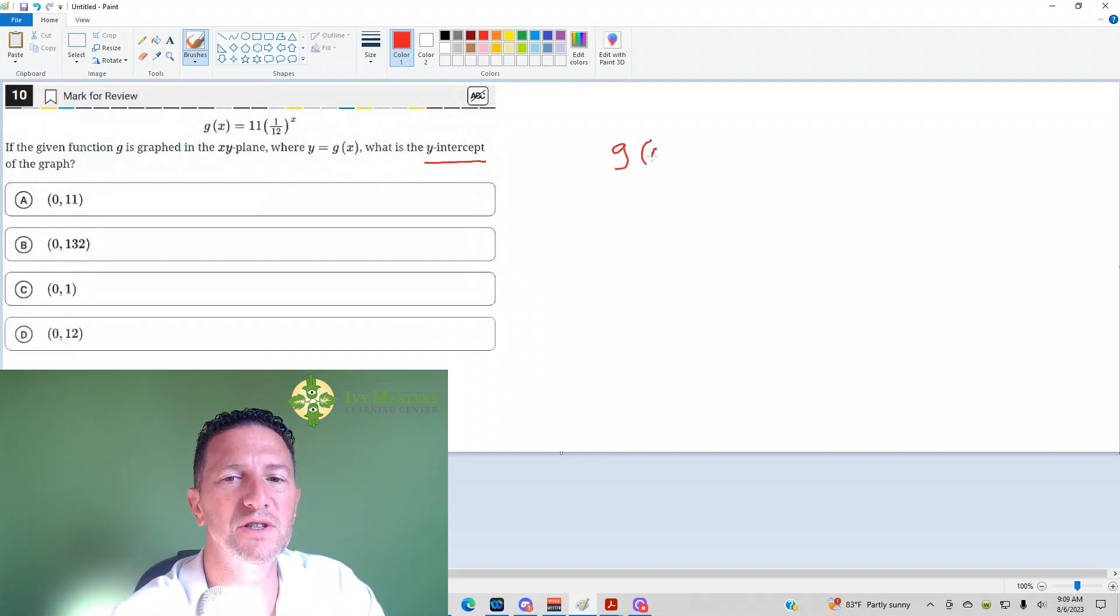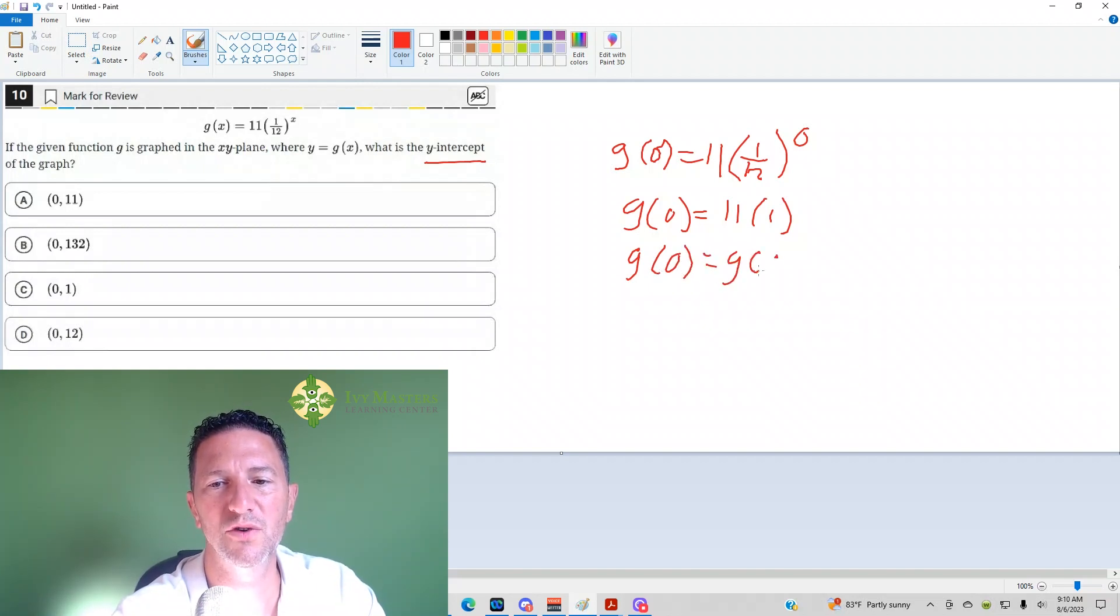So we've got g of x, you could say g of x, or you could say g of 0 equals 11 times 1 over 12 to the 0 power. So g of 0 equals 11 times anything to the 0 power is 1, so it's 11 times 1. So g of 0, or you could say g of x equals 11.